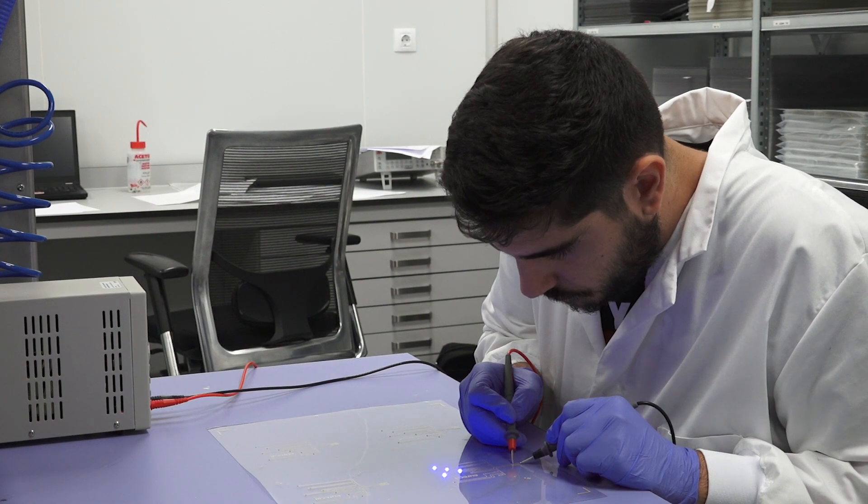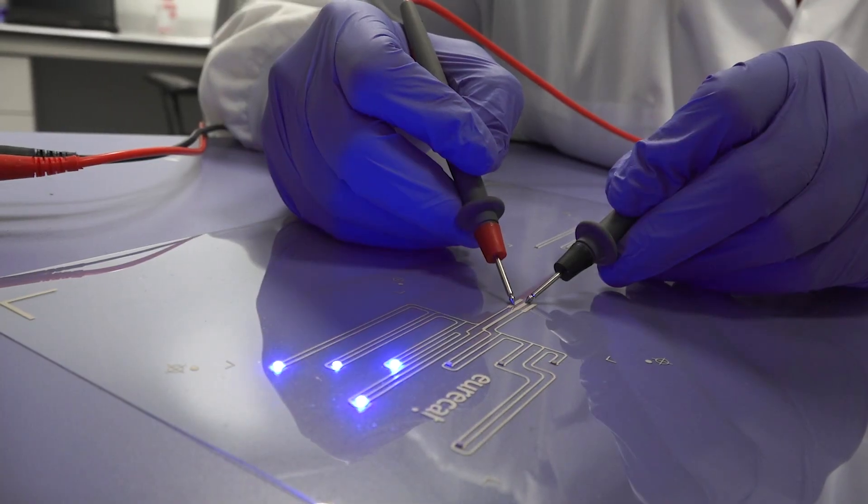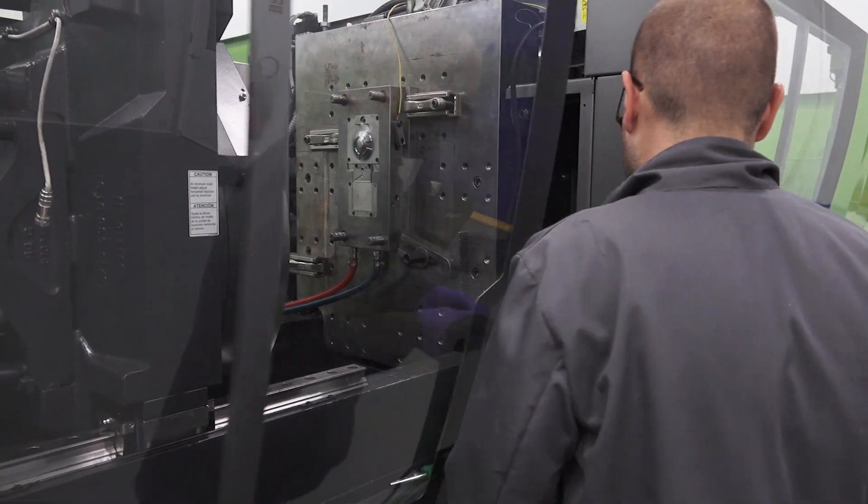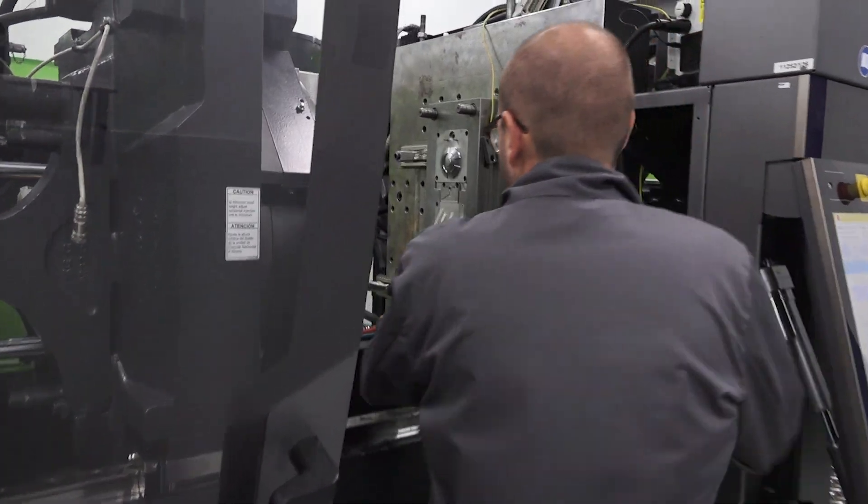In the third stage of thermoforming, 2D films are transformed into 3D shapes. Finally, at the injection stage, the film is coated with plastic materials.